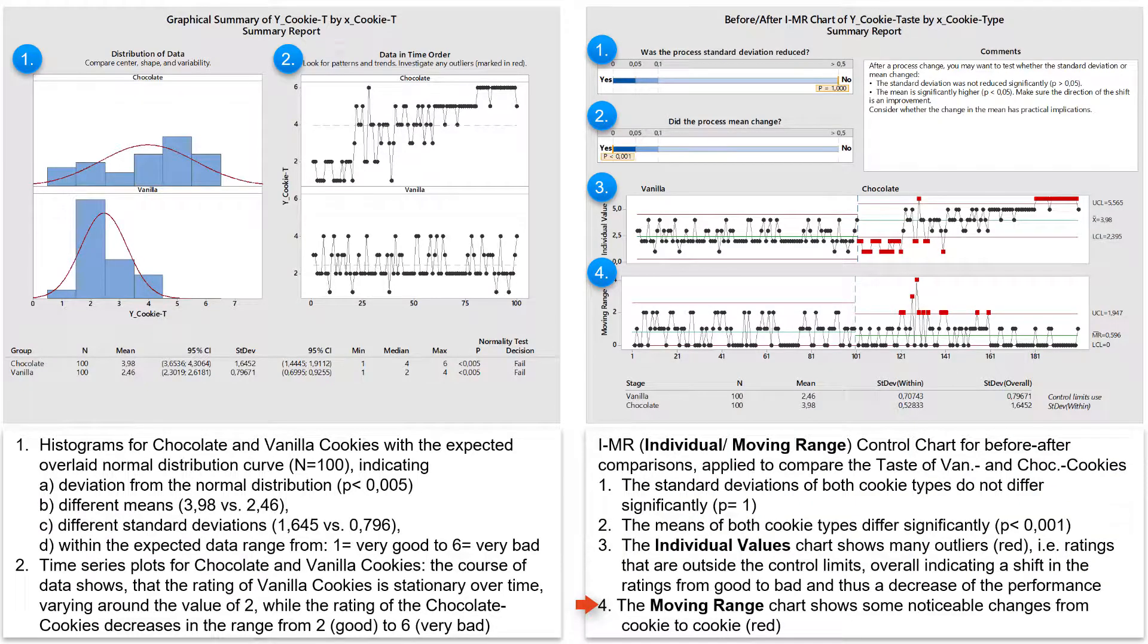This also applies to the signals in the MR chart. Here the red data points show strong chronological changes in the ratings of the taste from cookie to cookie. And again the question of the causes for these fluctuations arises.